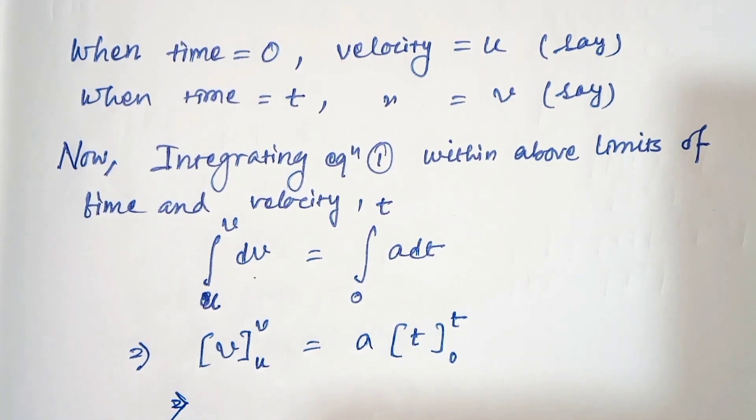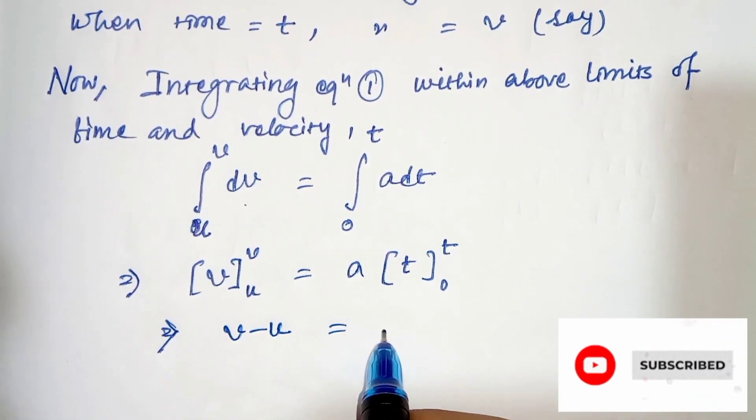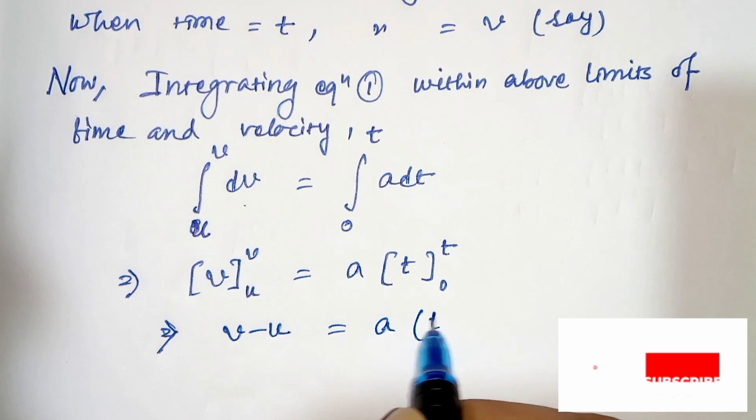Now let's apply the limits. It will be upper limit minus lower limit, v minus u, and from here, a times t minus 0.